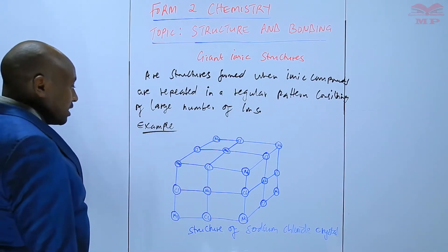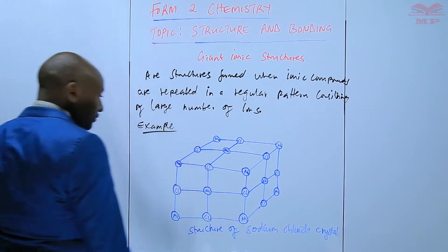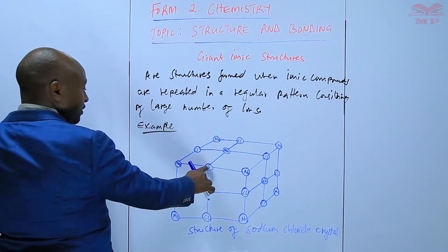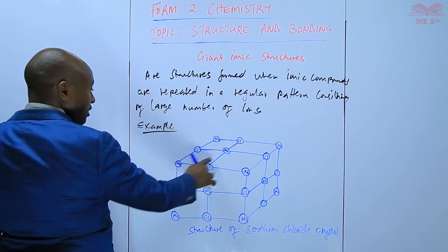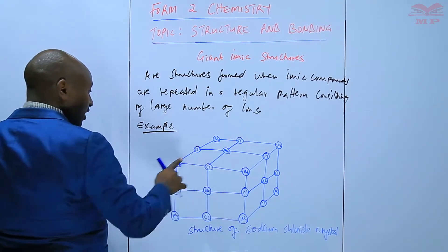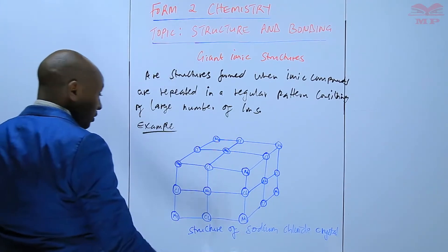And each chloride is surrounded by six sodium ions as well. For this one, we have one, two, three, four, five, and six — the one on top. So each chloride ion is also surrounded by six sodium ions.